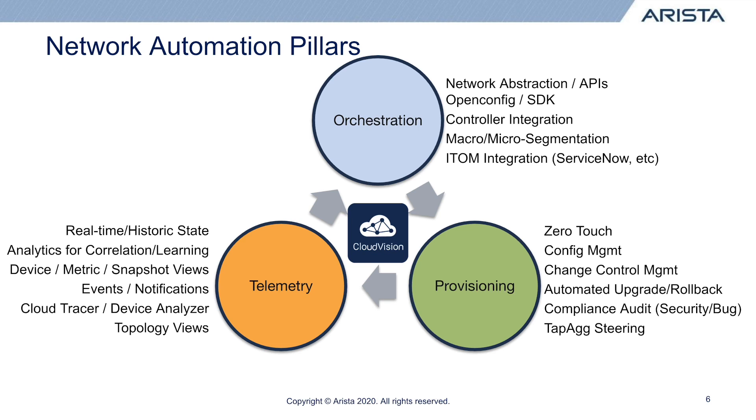The first thing is configuration management. There are many different EOS devices — currently the limit is 1,000 with the latest version of Cloud Vision as of about fall of 2021. You do this through Configlets, either static Configlets or dynamically generated Configlets through the Configlet builders, and everything would be controlled from Cloud Vision. You would actually stop going to the switches to do configuration changes. You can go to the switches and do show commands for troubleshooting, but Cloud Vision also provides the ability to do troubleshooting in addition to that. But you would be configuring things on Cloud Vision instead.